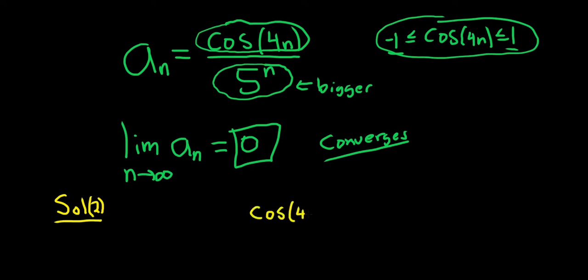The cosine of 4n is less than or equal to 1 and greater than or equal to negative 1. And then you can divide each piece of this inequality by 5 to the n. So 5 to the n, 5 to the n, and then 5 to the n.